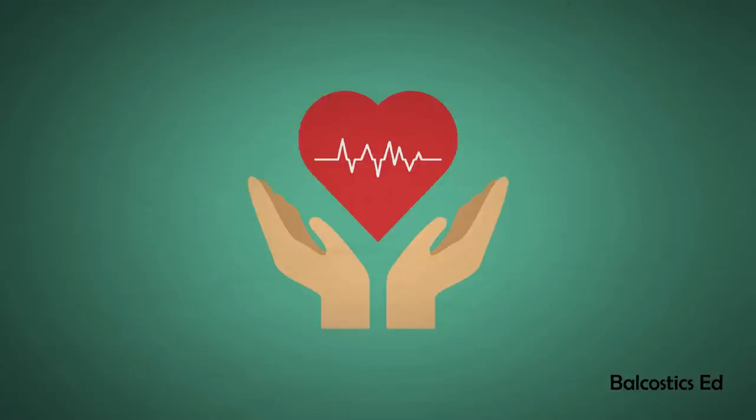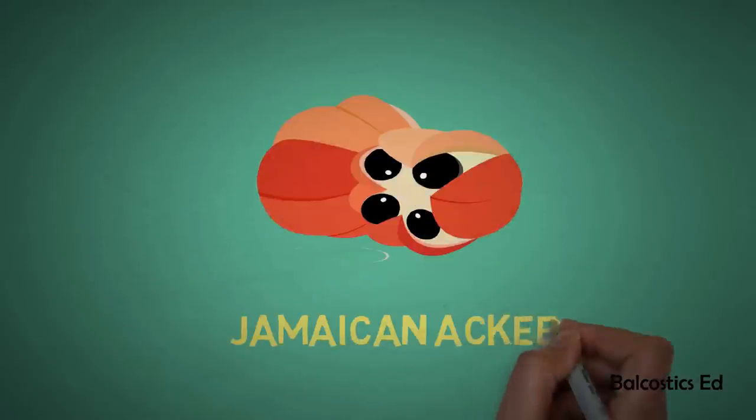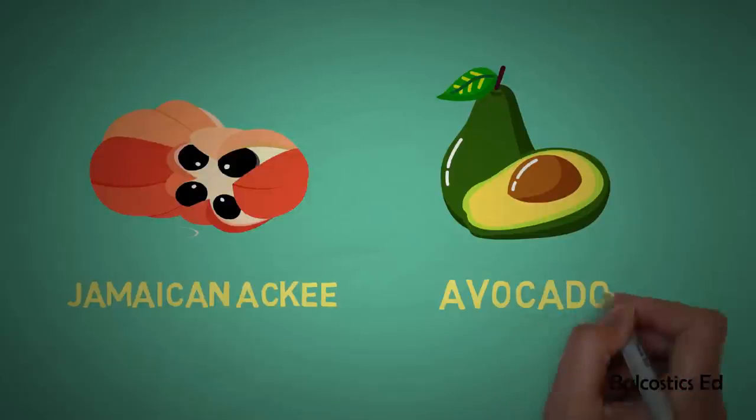Two other sources of fats that are often mislabeled are the Jamaican ackee and the avocado pear. Neither has any cholesterol, and the fat is monounsaturated—that is, the same type of fat that we pay so much for in olive oil.